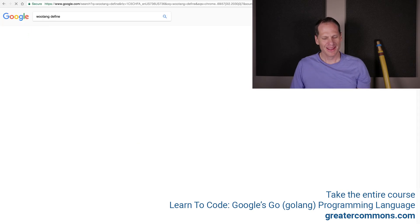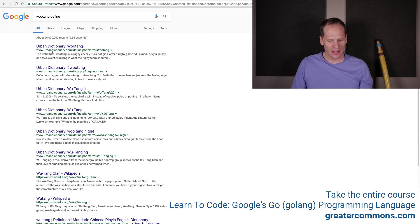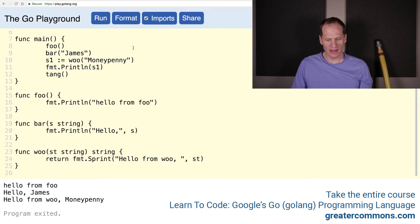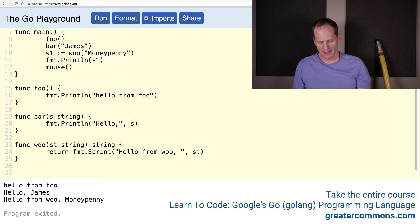There we go. Func mouse. We'll take in, sure, I don't know. We'll call this first name, last name, string.